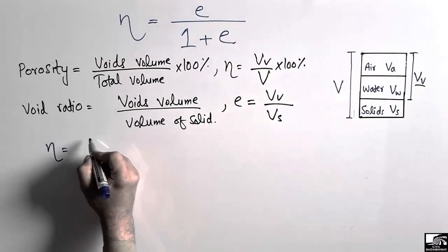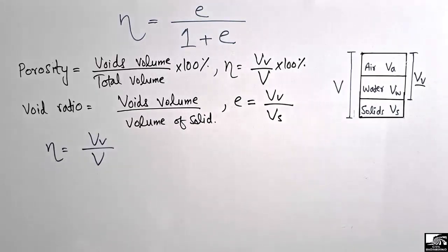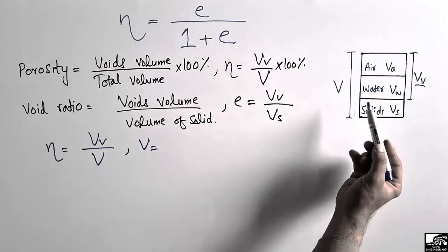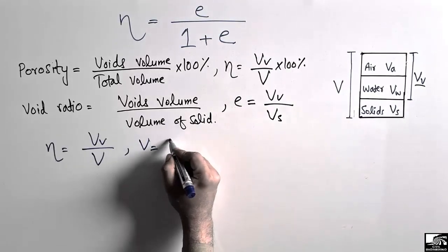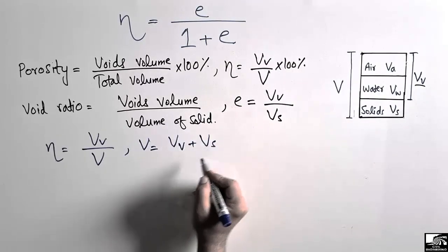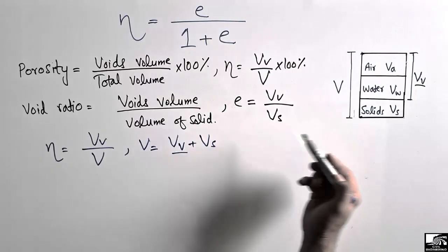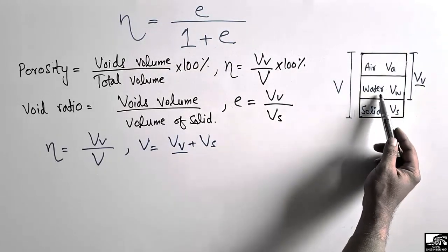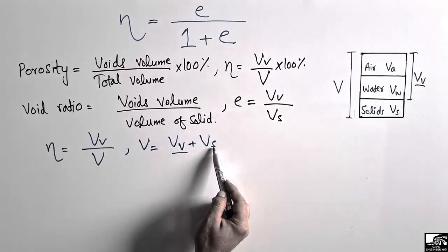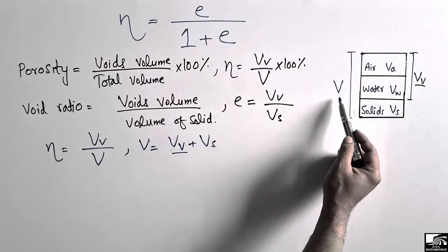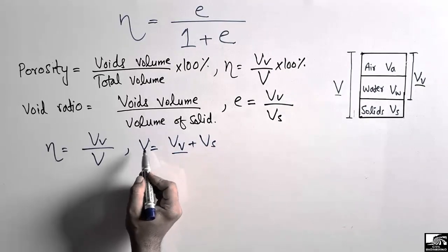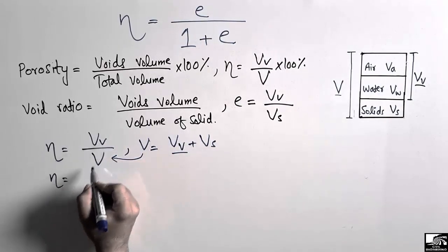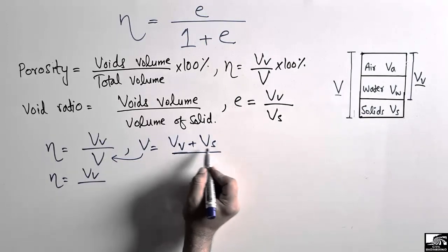We know that porosity n equals VV divided by total volume V. The total volume V equals the volume of voids VV plus the volume of solids VS. So we substitute this into the porosity definition: n is equal to VV divided by VV plus VS.